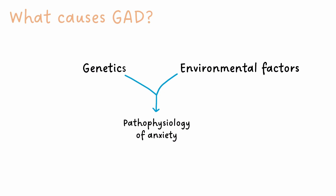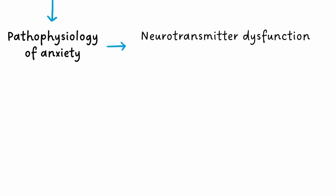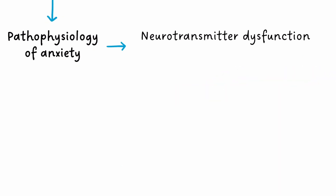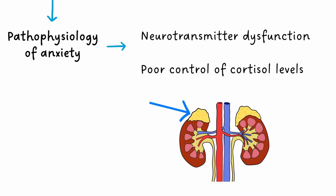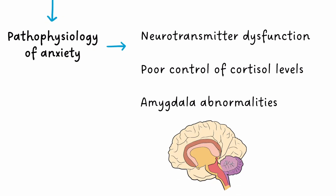Looking at it on this level, there are multiple theories about what is actually happening in the body that results in the subjective experience of anxiety. Neurotransmitter dysfunction is one theory, particularly problems with low GABA levels or dysregulation of serotonin levels — both neurotransmitters whose function is to relay messages from one neuron to the next across the synapse. Poor control of cortisol levels produced from the adrenal gland is another theory, where high cortisol levels are thought to contribute to the feeling of anxiousness. Amygdala abnormalities is another — the amygdala is a region of the brain highly involved in the experience of emotions, and MRI studies have demonstrated how the amygdala is overactive during an anxiety response.